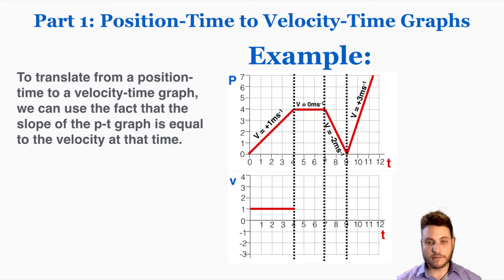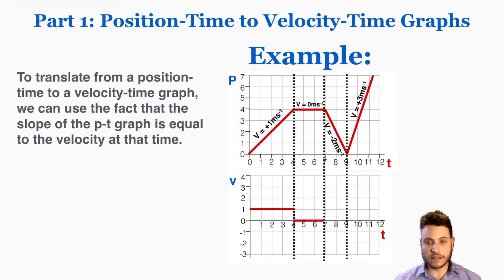Since the velocity is constant within each section, on the velocity graph we record horizontal flat lines showing that the velocity stays the same. In the first section the velocity is positive 1 m/s for 4 seconds, in the second part it's 0, in the third part it's negative 2 m/s, and in the fourth part it's positive 3 m/s. That's what the velocity-time graph looks like for that position graph.